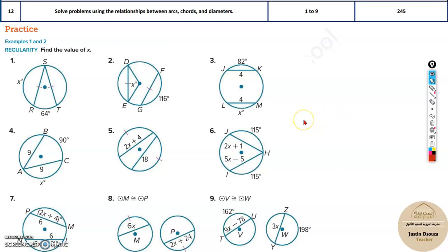Now we will solve problems using relationships between arcs, chords, and diameters. Here you can see different types of figures. All you need to do is solve for x. You can see x is unknown here, here, and various other places in terms of equations or different ways. Before we begin, we will just recall a few of the formulas.